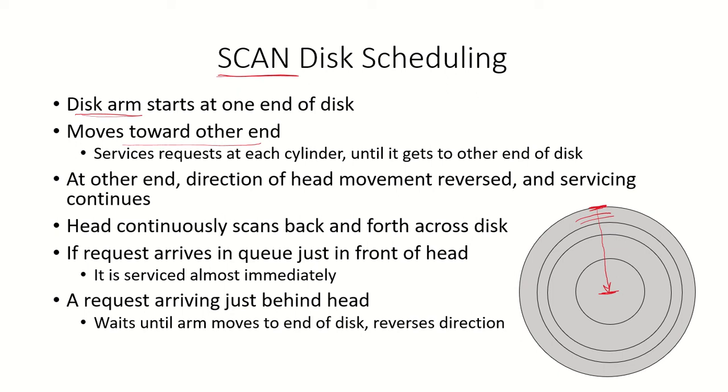If it started at track 0 and is moving inwards, and there was a request at track 5, nothing will happen at tracks 1, 2, 3, 4, but at track 5 whatever request was there is serviced. Then the next track would be considered on the way towards the inner side of the disk.